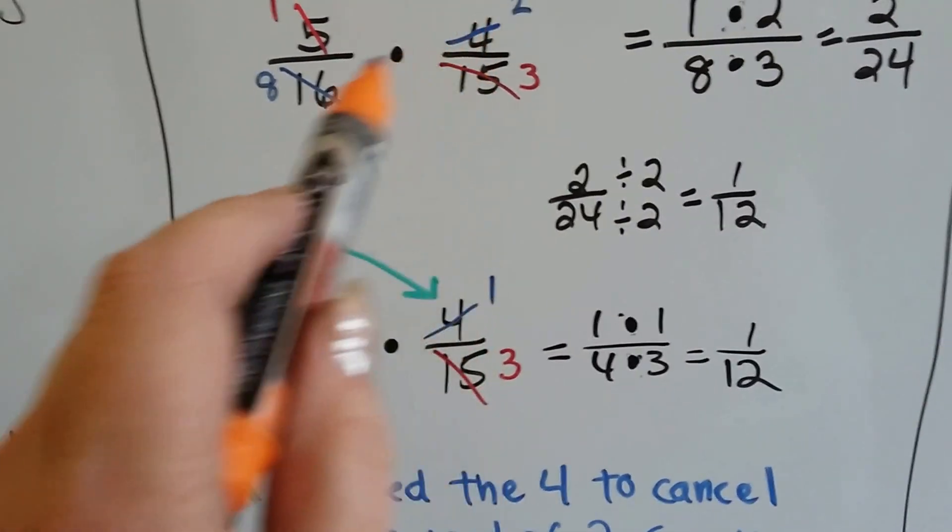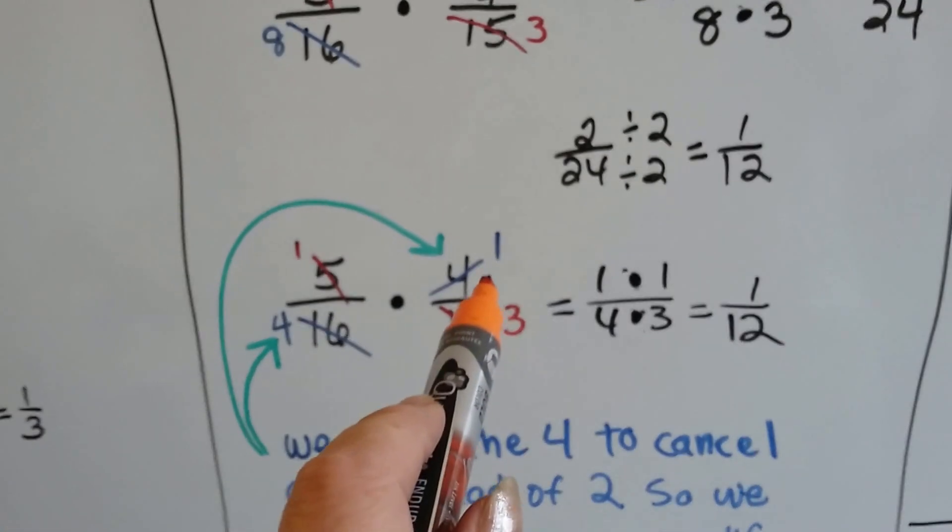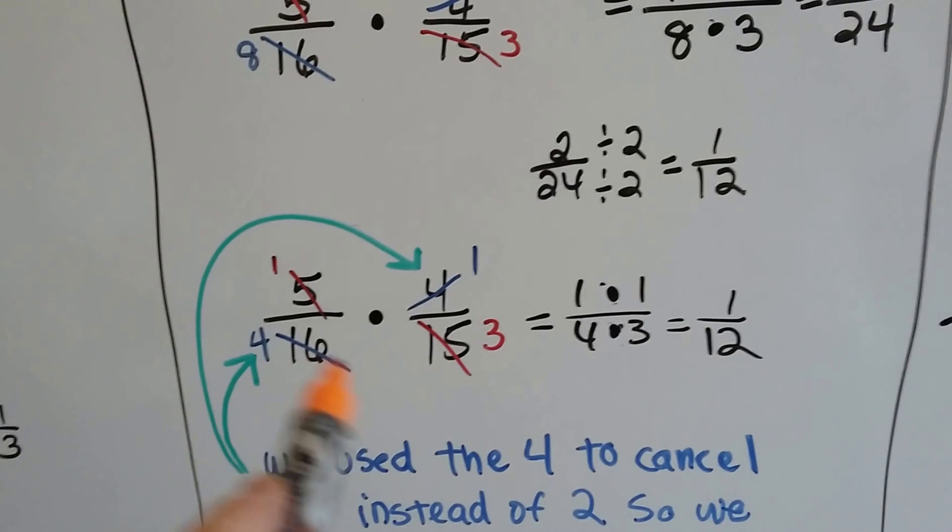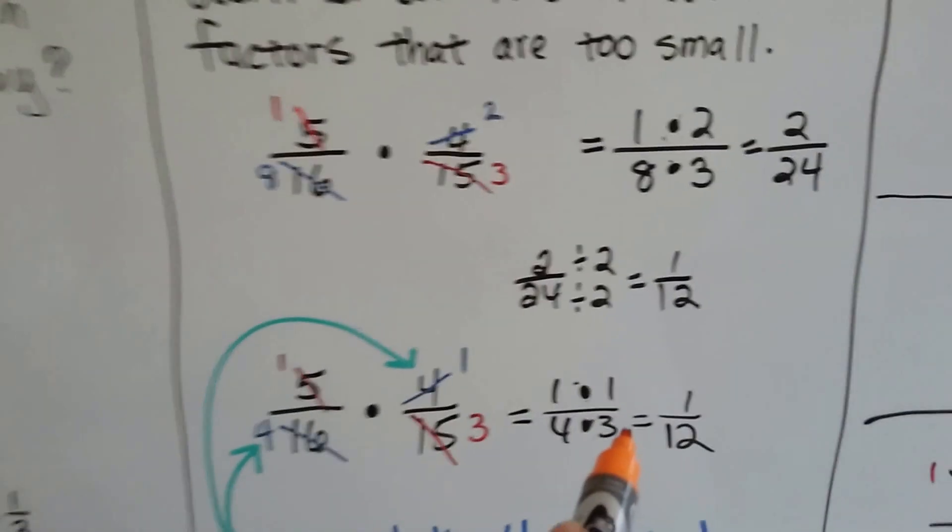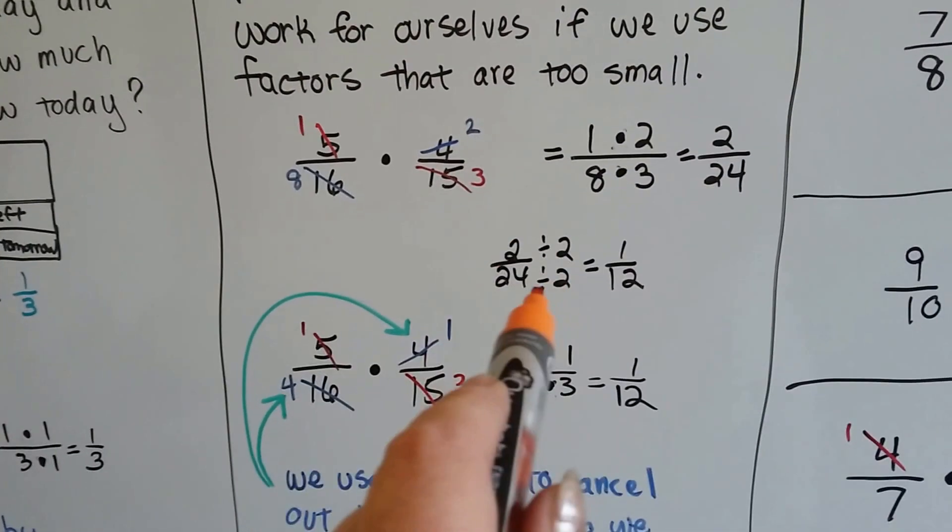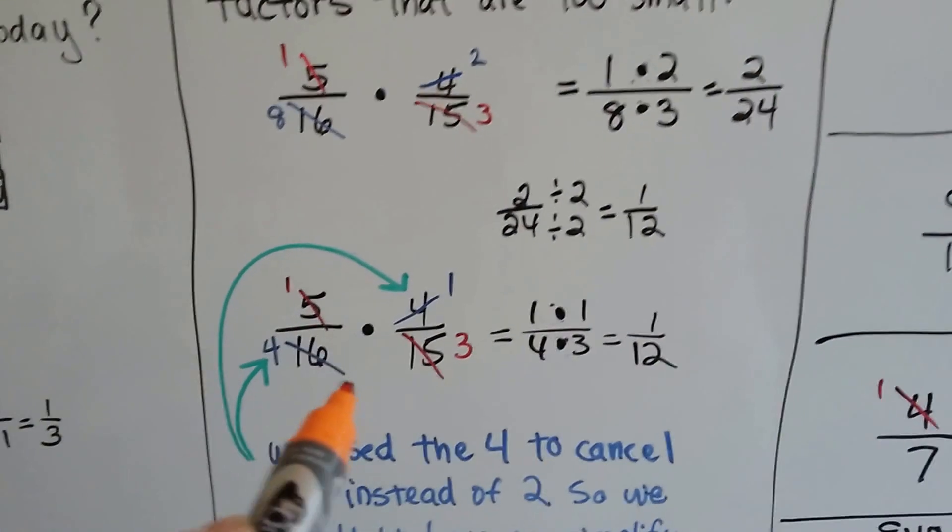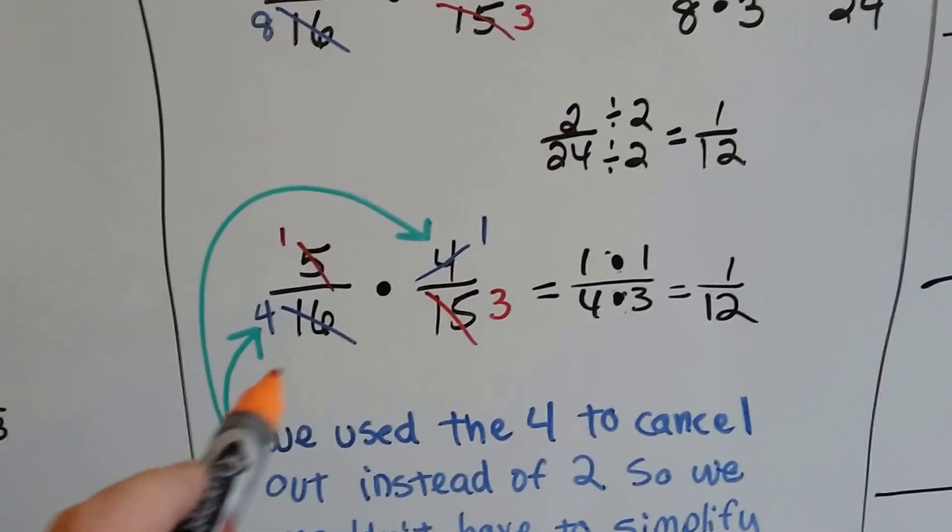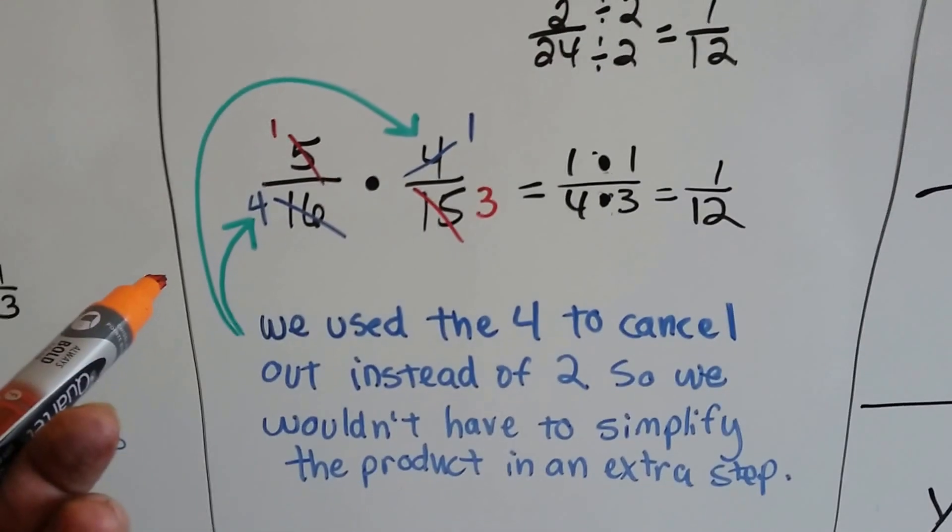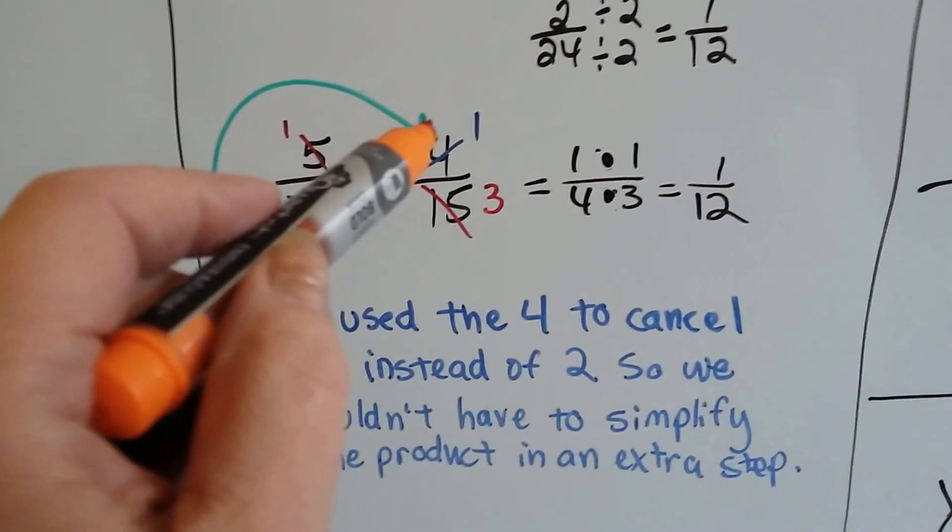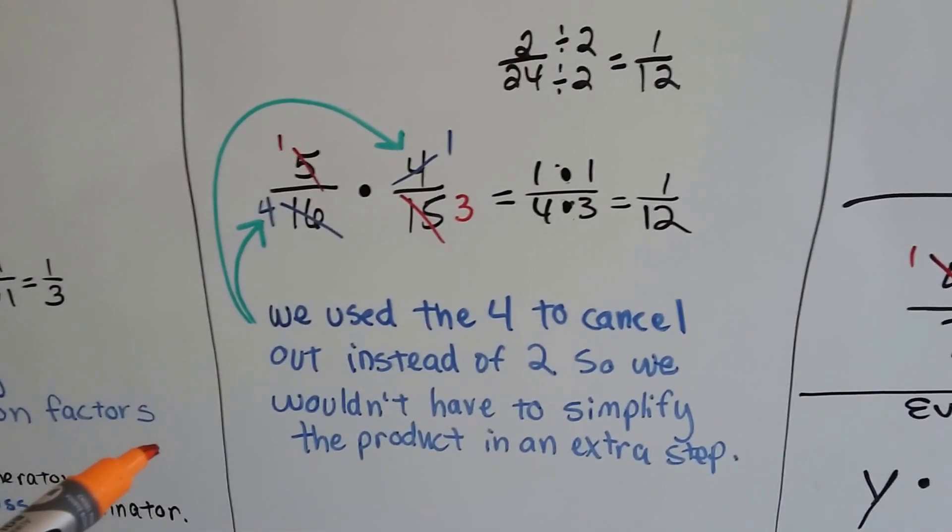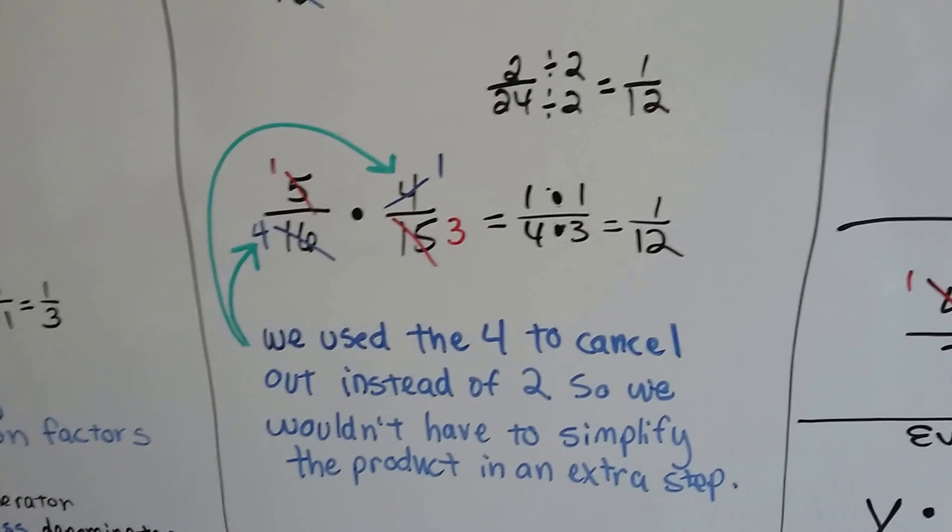If we had used a four to cancel out the four and the sixteen, the four would have become a one and the sixteen would have become a four. Then we would have had one times one over four times three. We would have had one-twelfth, which is the final answer here, and we wouldn't have created that extra step. No different than if you're simplifying at the end of the problem. When you're cross-canceling out like this, you can create extra work if you don't choose a large enough number.